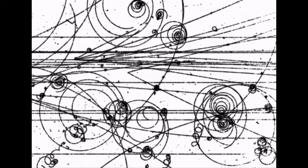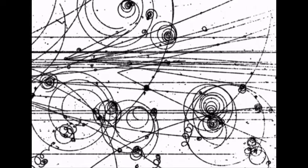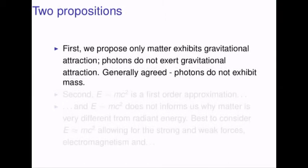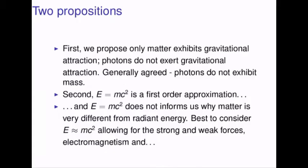Light following a curved geodesic or suffering a redshift is not the same thing as effecting gravitational attraction. First, we propose only matter exhibits gravitational attraction. Photons do not exert gravitational attraction. It is generally agreed that photons do not exhibit mass. Second, E equals mc squared is a first-order approximation, and that's about it. E equals mc squared does not inform us why matter is very different from radiant energy. It is really best to consider E as equivalent to mc squared, allowing for the strong and weak forces, electromagnetism, and, we think, gravitational attraction.